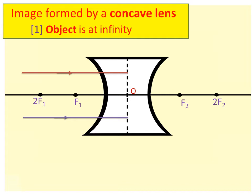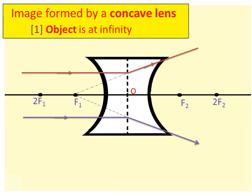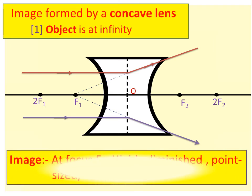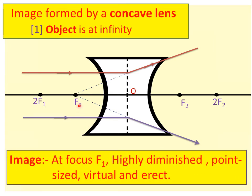We know that in case of a concave lens, a ray of light from the object parallel to the principal axis, after refraction in case of a concave lens, the ray appears to diverge from the principal focus located on the same side of the lens. So we get the image here, and image is at focus F1 — highly diminished, point sized, virtual and erect.